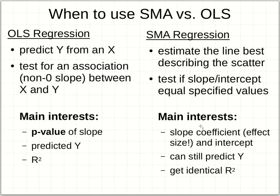The main interests of OLS are the p-value — is the slope significantly different from zero — what are your predicted y-values, and what is your r-squared, how well does the data fit. For an SMA regression, instead you're testing to see if the slope and the intercept equal certain specified values. You might specify zero as a null test, just like OLS, but you could actually specify some other hypothesized values. The main interests, importantly, are the slope coefficient as an effect size and the intercept. You can still predict a y-value, and in fact you get an identical r-squared.